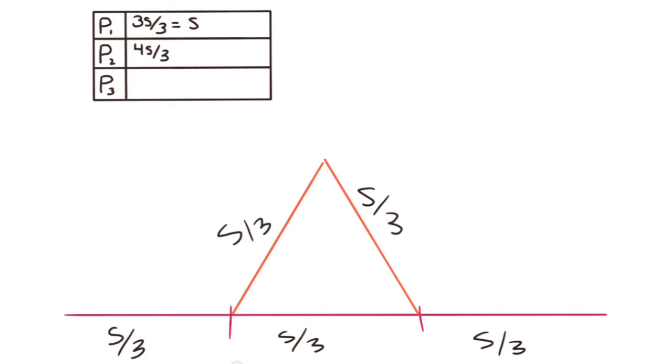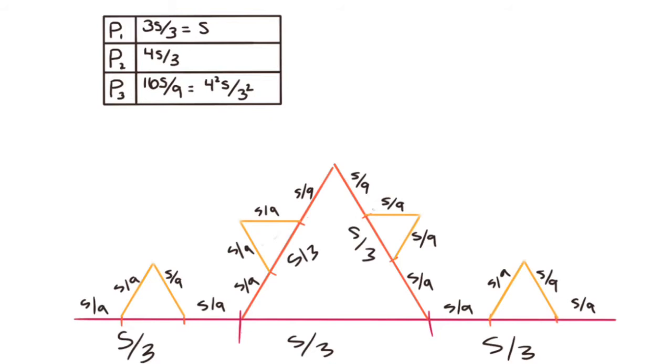On the next level, we again divide every side into three parts, or a third of a third. This gives us s over 9 for every side. Adding up all the sides gives us a total perimeter of 16s over 9, or 4 squared s over 3 squared. If we were to continue, we would see that the pattern is 4 over 3 to the nth power.